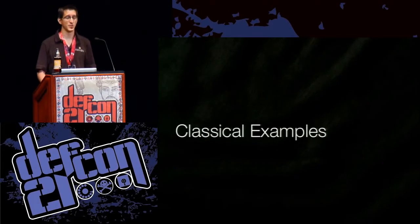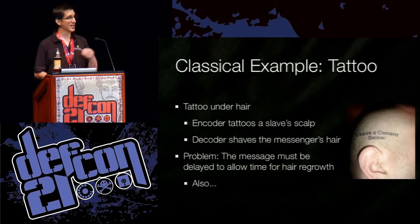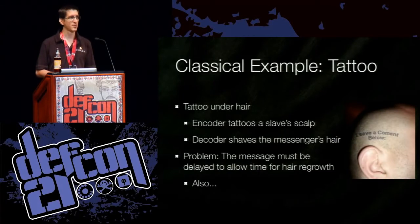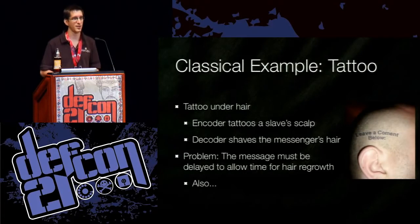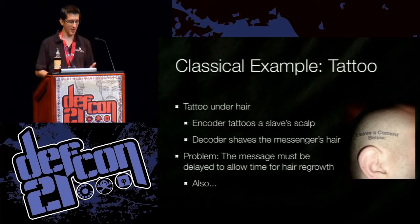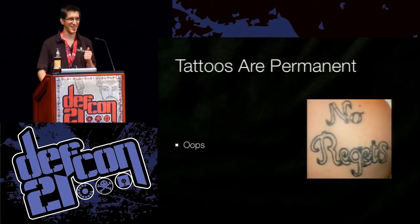Let's go through some classical examples. The first example is a tattoo. Basically, somebody would take one of their slaves — this is back in the day when people had slaves — shave the scalp, tattoo a message on the scalp, and wait for the hair to regrow. They would send the slave to the recipient with a package. When they found some private time, they would shave the head and read the message. So it looks like the slave is delivering a package, but there's a hidden message under the hair. One problem: the message has to be delayed while the hair regrows. Also, tattoos are permanent. No regrets.